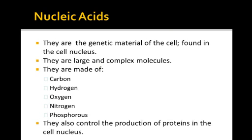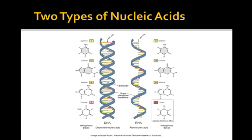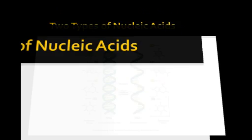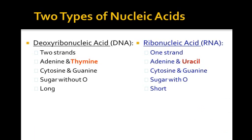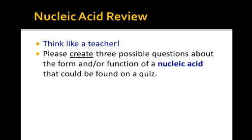Nucleic acids are the genetic material found in the nucleus. They're very large and complex, and they can be changed or mutated by a number of different things — we'll discuss that when we cover genetics. They're made of carbon, hydrogen, oxygen, and nitrogen, plus phosphorus. They're essentially the boss of the cell, telling the cell what to do. There are two types: DNA on the left and RNA on the right, with some similarities and some differences between them.